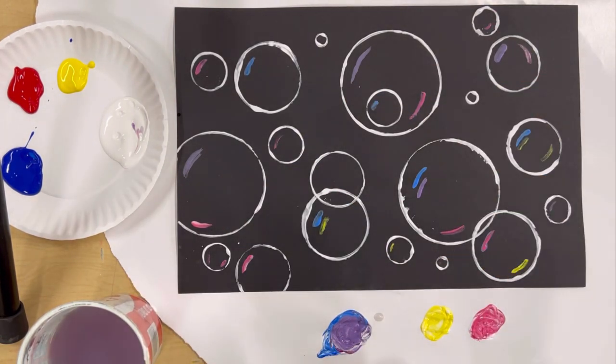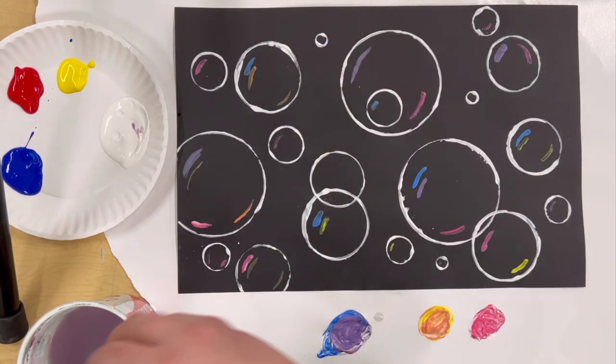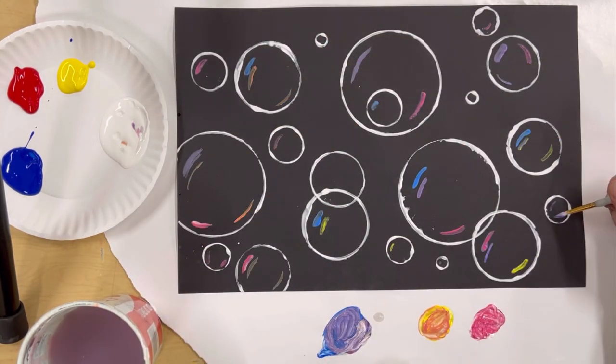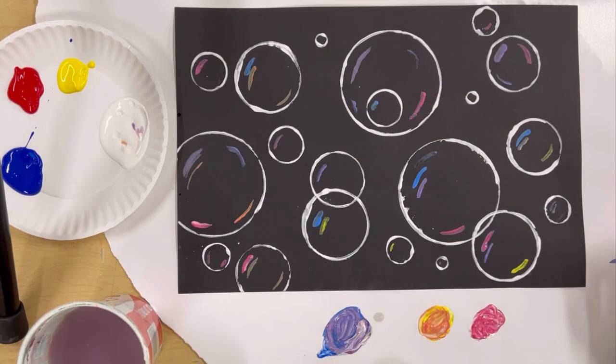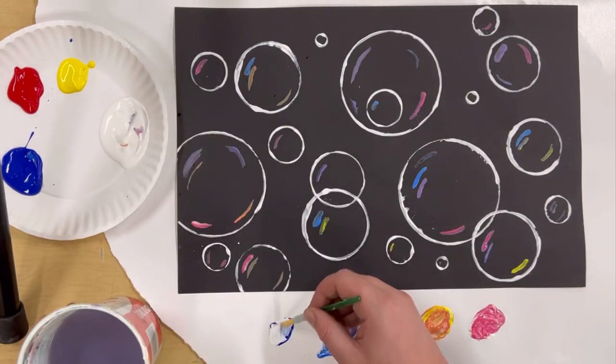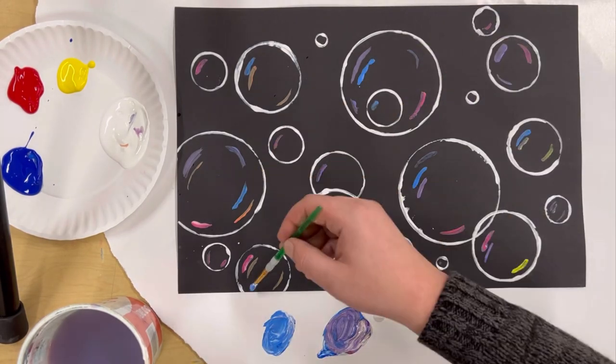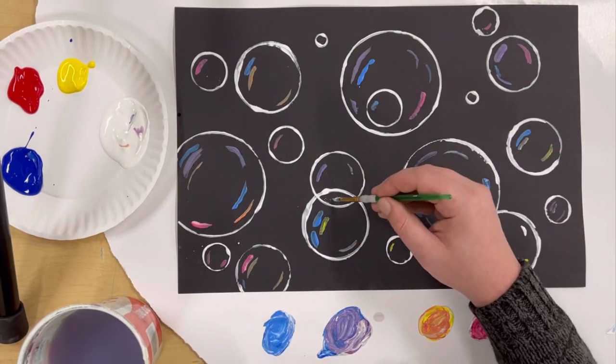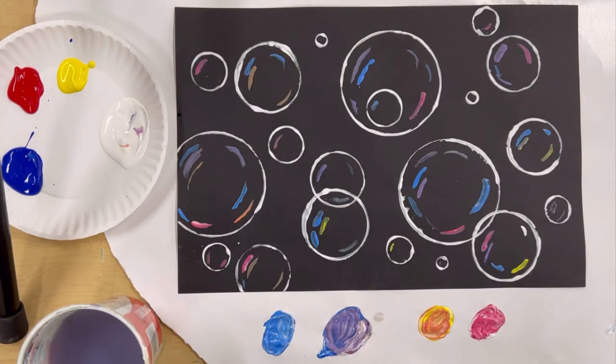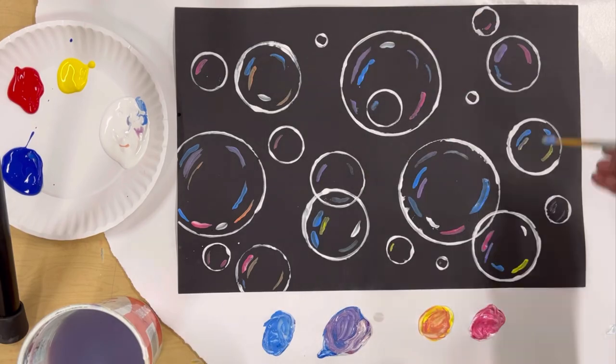And I'm just gonna keep making little lines on different parts of the bubbles showing how light kind of reflects in bubbles when you see them. And I'm gonna keep doing that till I have some light reflecting, some colors, some tints in each of my bubbles. Not the same colors, not in the same places, but in each of my bubbles.